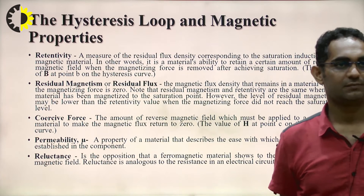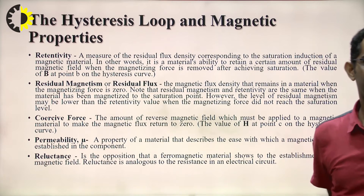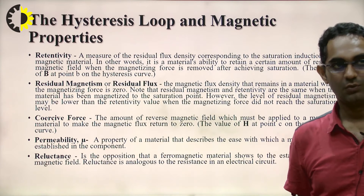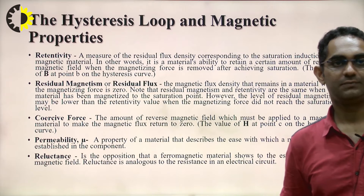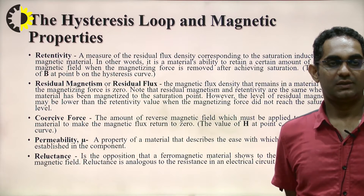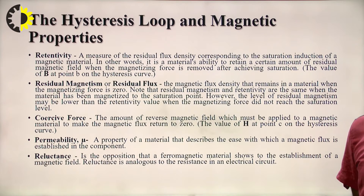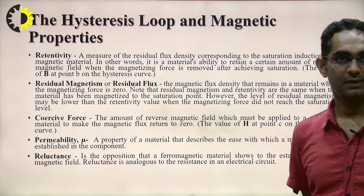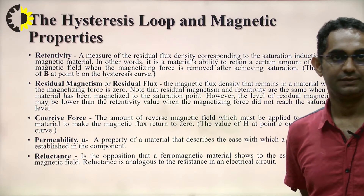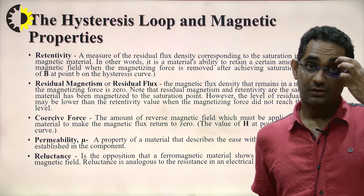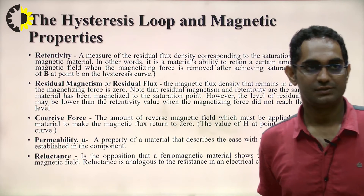Next is residual magnetism or residual flux — the magnetic flux density that remains in a material when the magnetizing force is zero. Note that residual magnetism and retentivity are the same when the material has been magnetized to the saturation point. However, the level of residual magnetism may be lower than the retentivity value when the magnetizing force did not reach the saturation level.